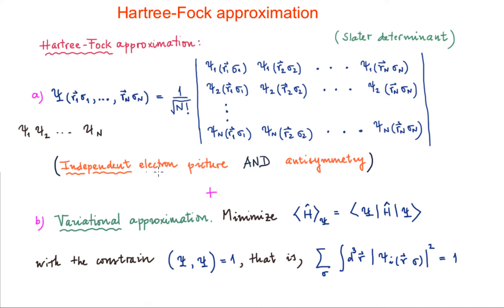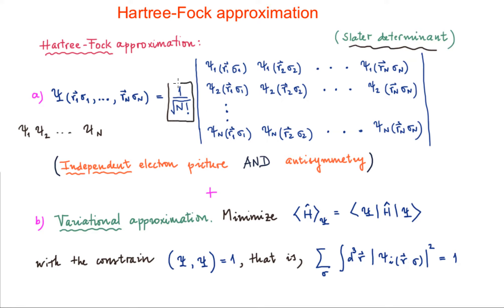But besides that, this wave function is going to be anti-symmetric, which was not the case of the Hartree approximation. So we need to anti-symmetrize this wave function, and we're going to do that using the Slater determinant. Within the Slater determinant, we have that the wave function is anti-symmetric. The pre-factor here is normalizing the wave function, considering that the wave function for each electronic state is already normalized. So that's the first feature.